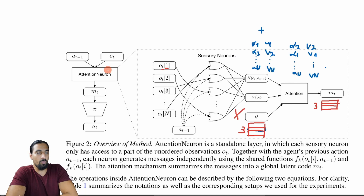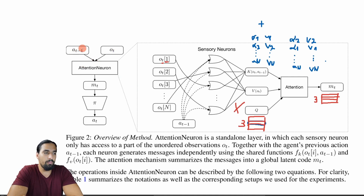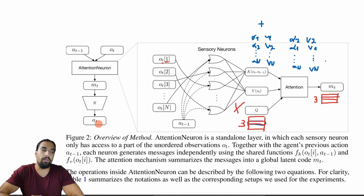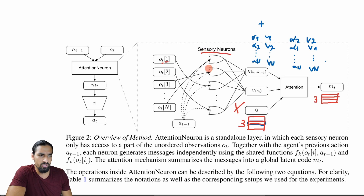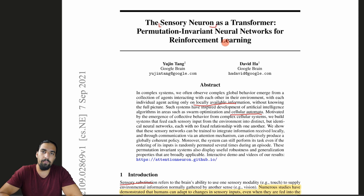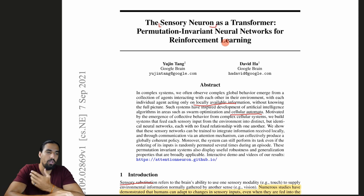On a high level, what happens across all four tested games: we input the observation, we input the previous action, we pass them through this attention neuron — the whole pipeline we just saw. We form the message, pass it through some policy function, and output the next action to interact with the environment. One small remark: these are called sensory neurons, and the whole thing is called the attention neuron. Going back to the title — 'The Sensory Neuron as a Transformer' — I think the transformer-like attention actually happens at the attention neuron level, not the sensory neuron level. But anyway, super small nit — I may be off.